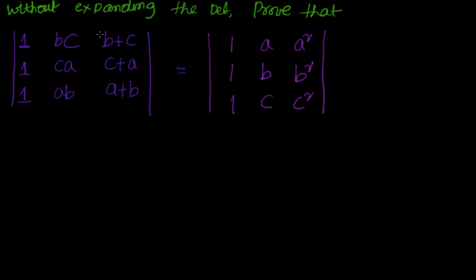Now if you see here in the left hand side we have B+C, C+A, A+B. But on the right hand side we don't have anything like that. We have just simply 1, A, A².